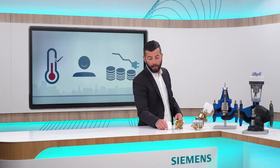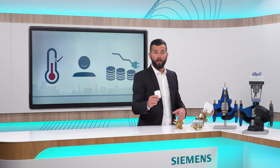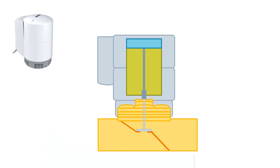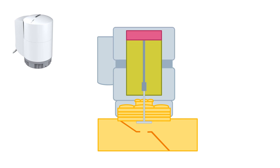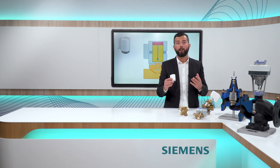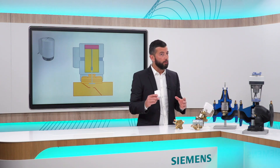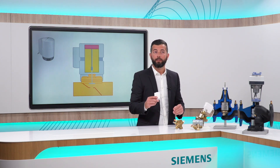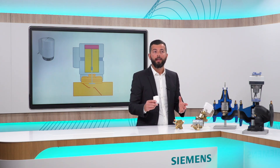Here, a thermal actuator could be a good choice. Thermal actuators are basically temperature-operated devices, where electricity heats up a Wax cartridge which expands and retracts. This kind of actuator is quite slow compared to other technologies, but also very quiet — perfect for noise-sensitive environments and therefore ideal for chill beams.